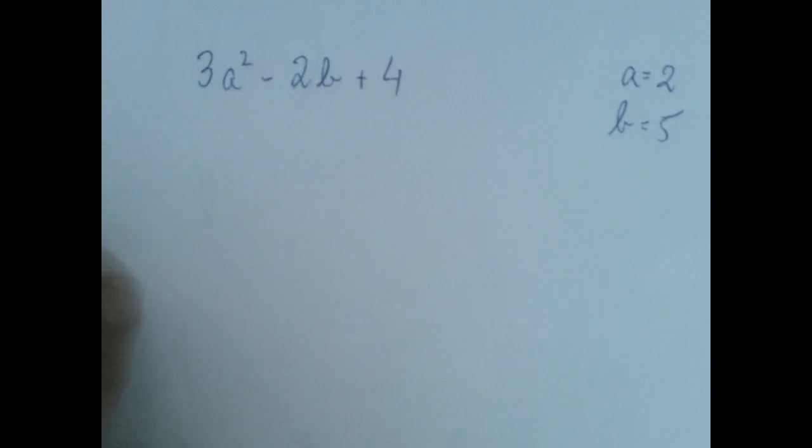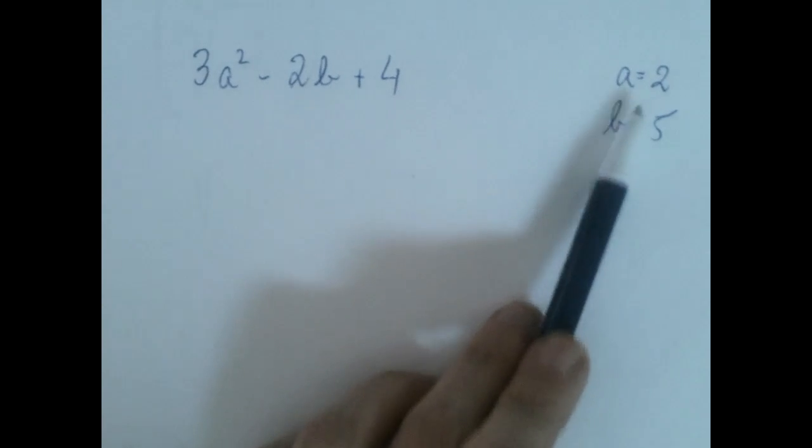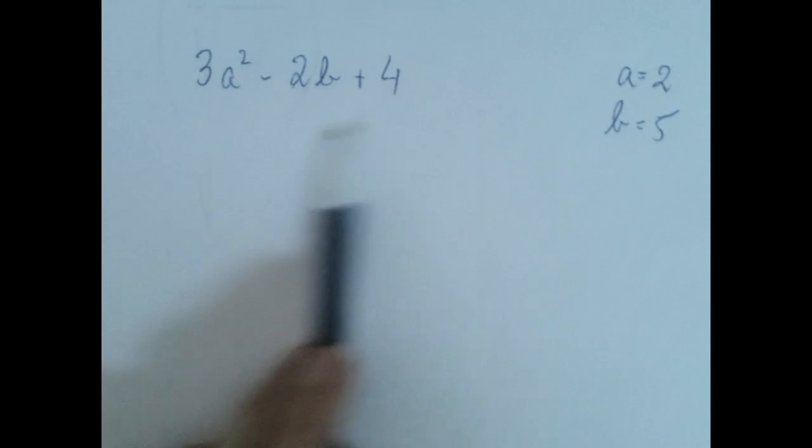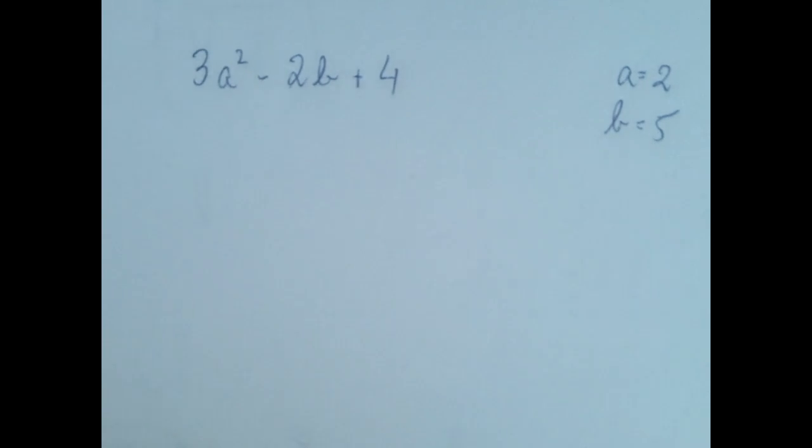Which means if we replace a by 2 and b by 5, what number will this boil down to? So this is called evaluating an algebraic expression.